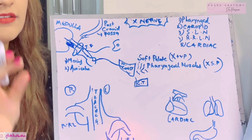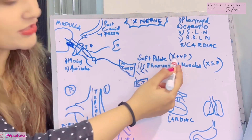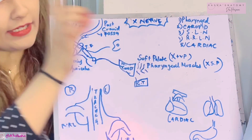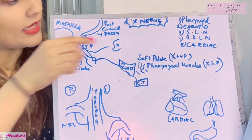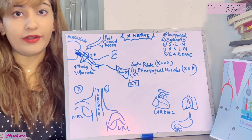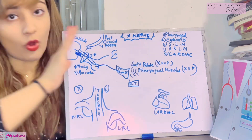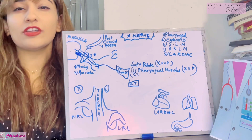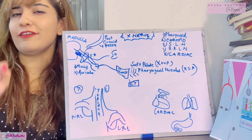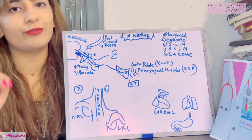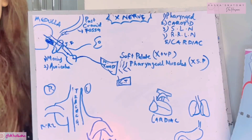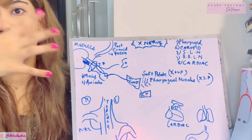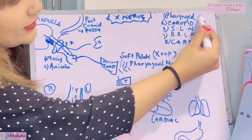From the pharyngeal plexus, supply is given to the entire pharynx — mostly the muscles of the pharynx — and the muscles of the palate. However, in the palate, one muscle is not supplied by the vagus: the tensor veli palatini, which is supplied by the mandibular nerve. In the pharynx, all muscles are supplied by the vagus and the 11th nerve except the stylopharyngeus, which is supplied by the glossopharyngeal nerve. If a lesion occurs, pharyngeal function is lost.